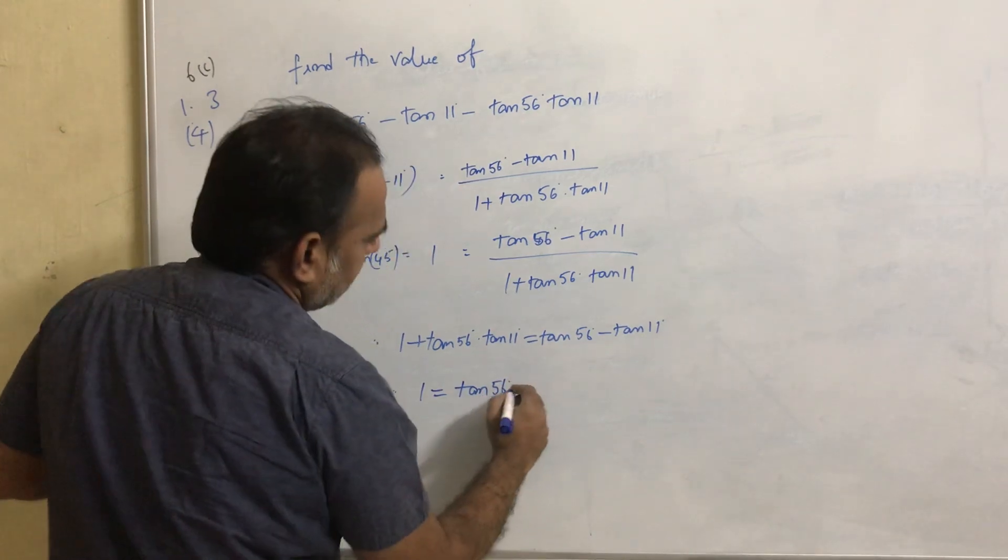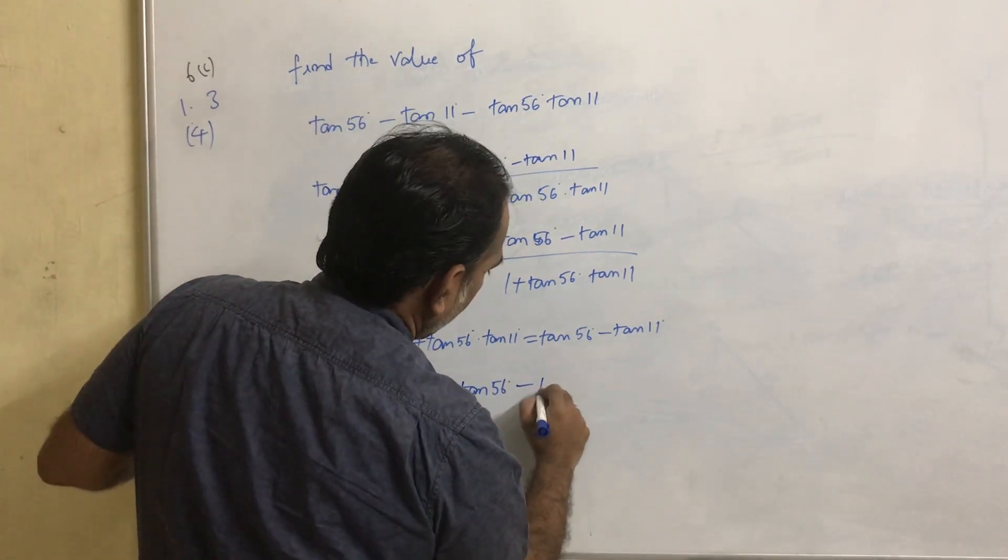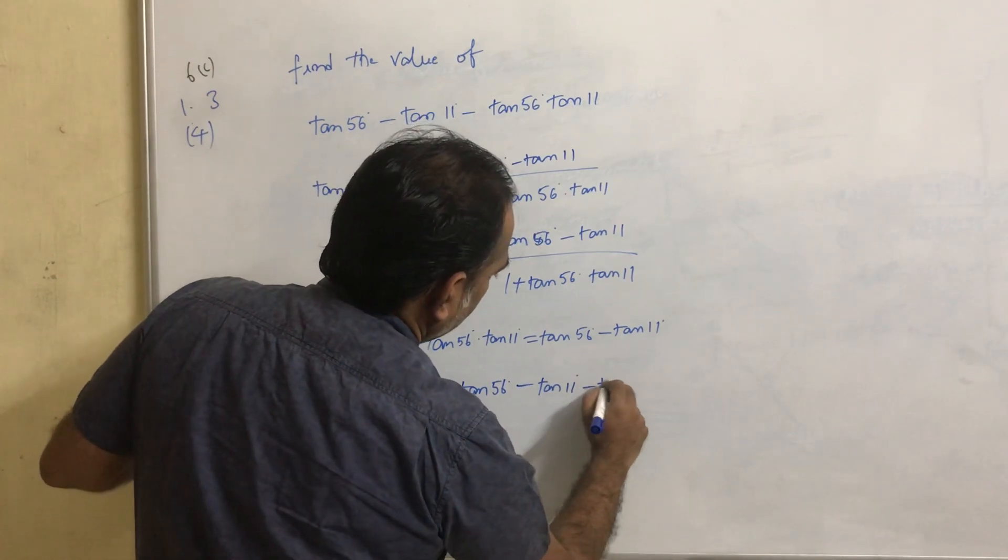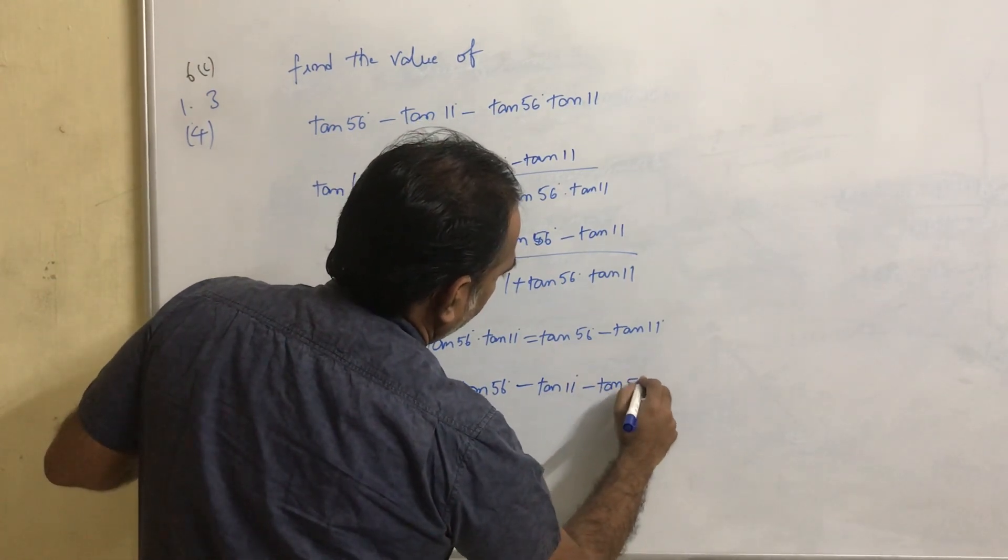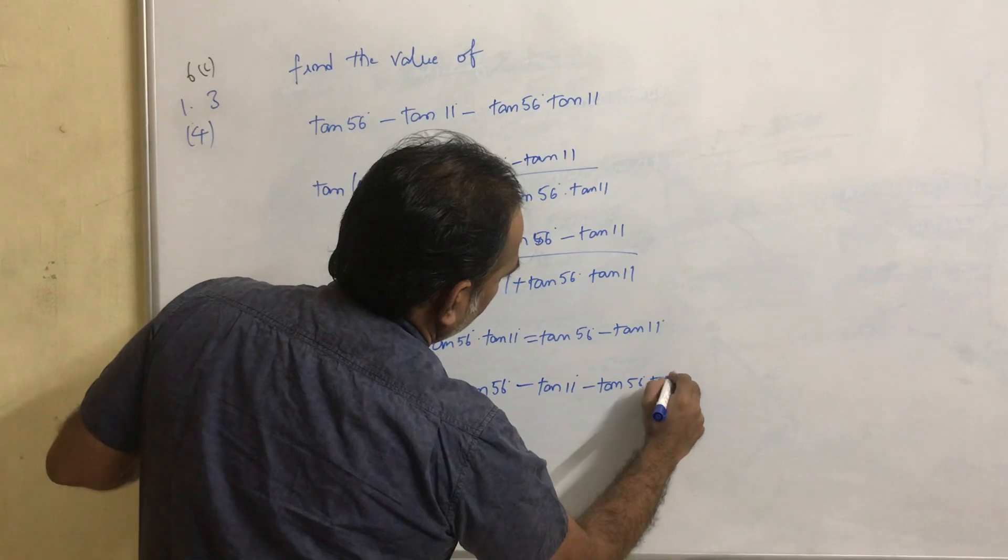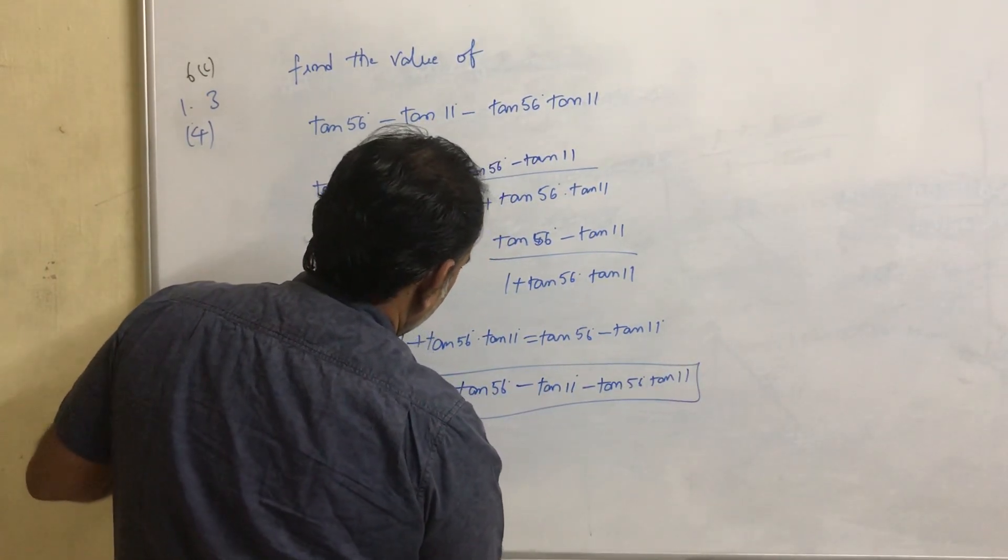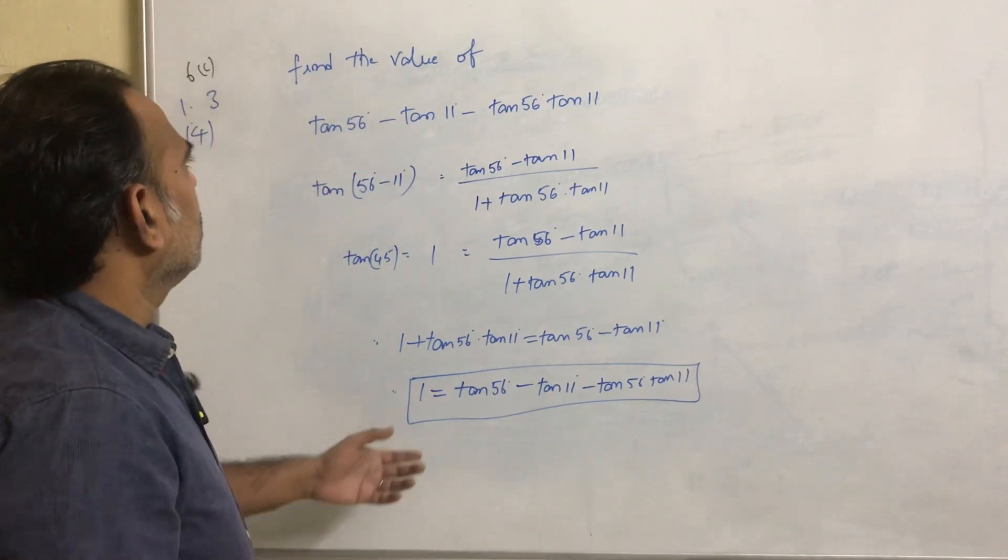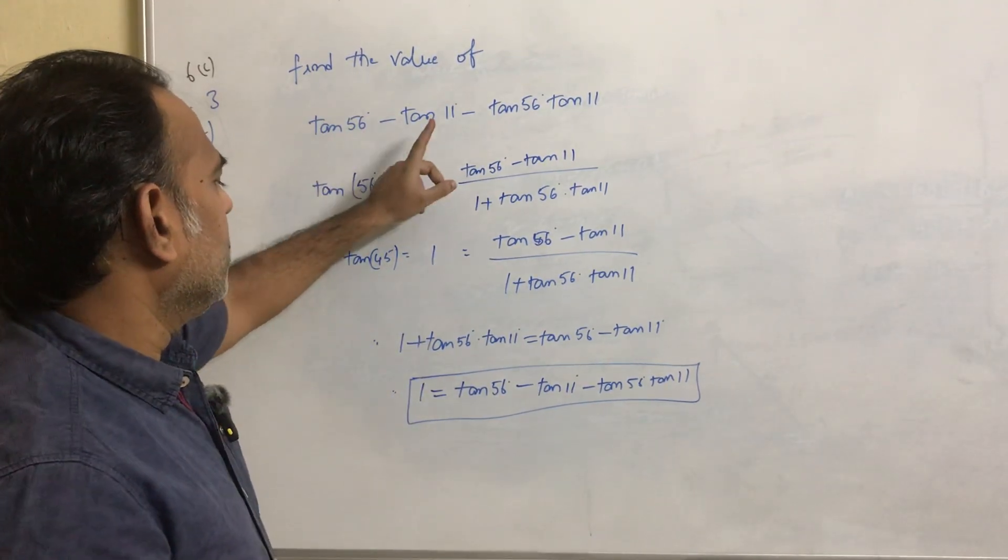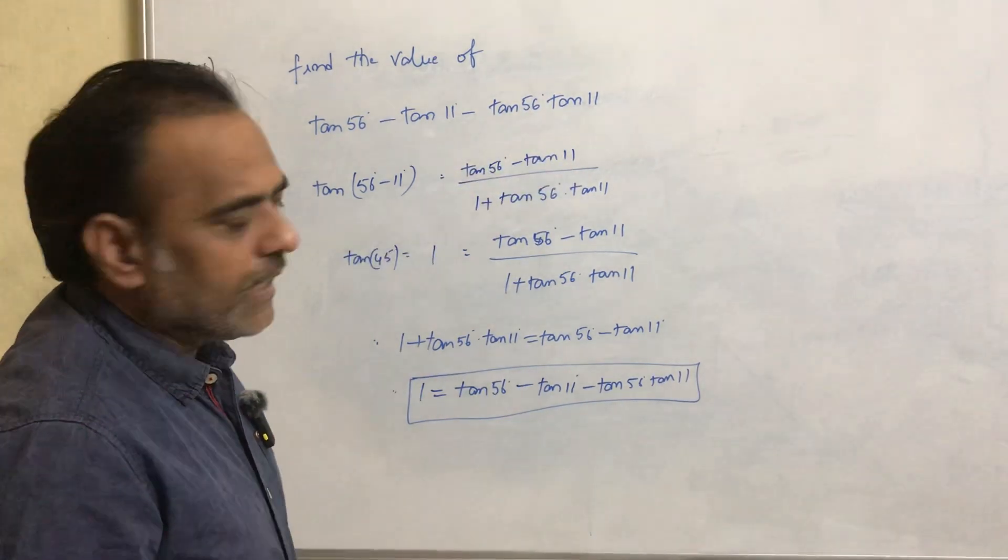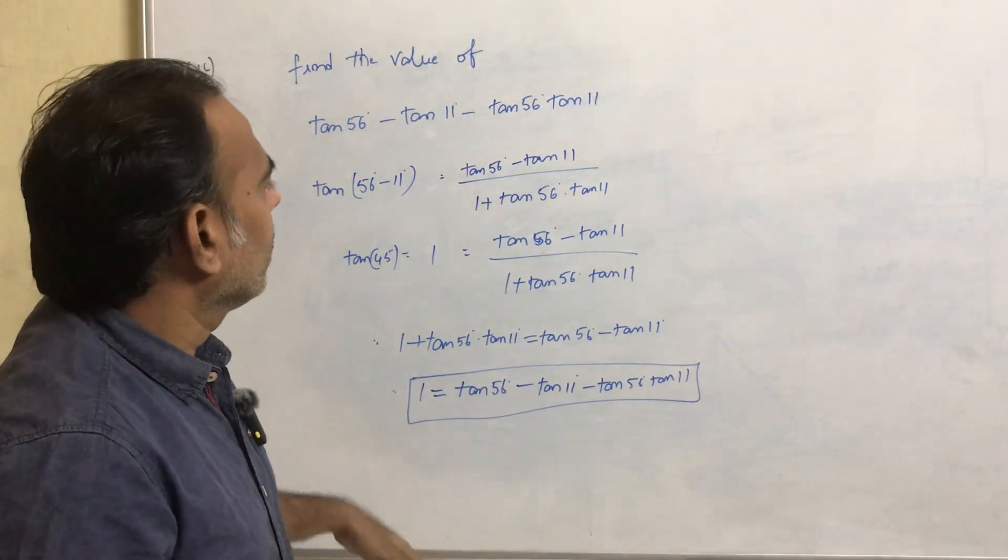So the value of tan 56° - tan 11° - tan 56° into tan 11° is equal to tan(56° - 11°) = tan 45° = 1. The value is 1.